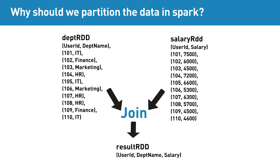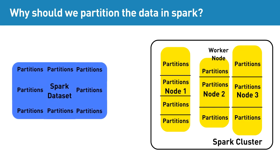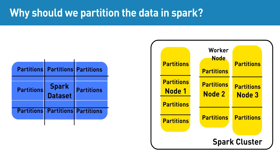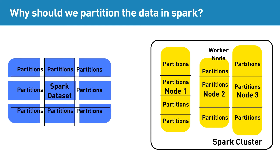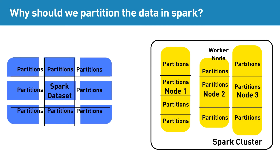By default, the dataset is split based on the block size and the different blocks are stored in different nodes of the cluster. When Spark's join operation happens, it has no way of knowing which node holds the key, so it ends up checking multiple nodes of the cluster, which increases network shuffling and thereby impacts the performance.